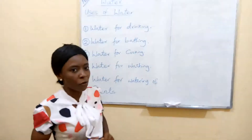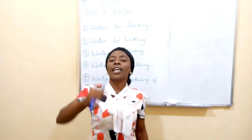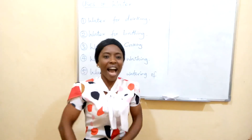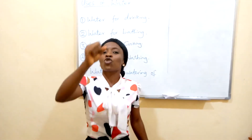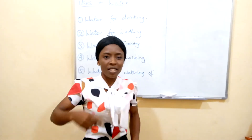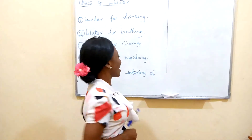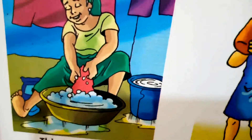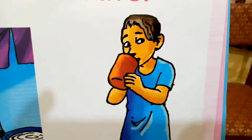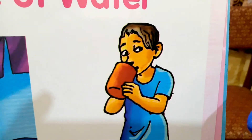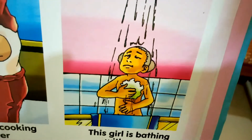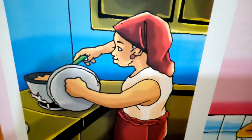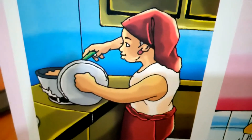Can you now tell me what we use water for? Yes! Drinking. Cooking. Bathing and washing. What do we use water for? Drinking, cooking, washing and bathing. Alright! Water is for washing — mommy is washing. Water for drinking — she is drinking water. Water for bathing. Water for cooking — mommy is cooking jollof rice.